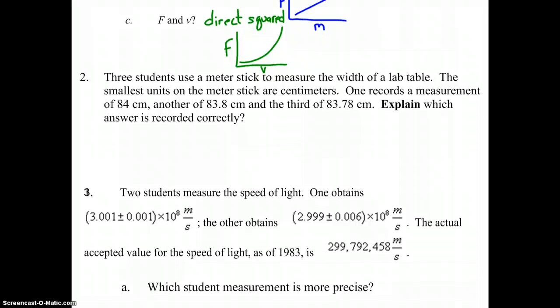In question two, we have three students that use a meter stick to measure the width of a lab table. The smallest units on the meter stick are centimeters. One records a measurement of 84 centimeters, another 83.8 centimeters, and the third 83.78 centimeters. Explain which answer is recorded correctly.